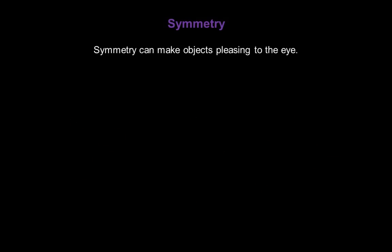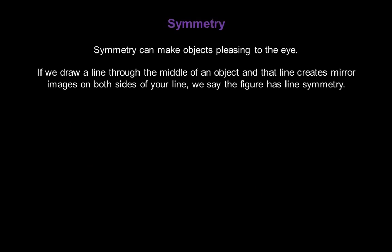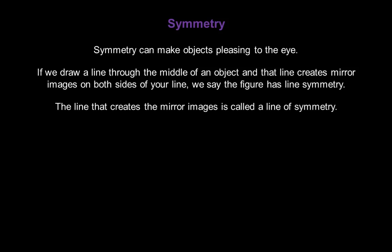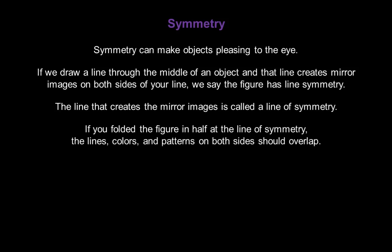Symmetry can make objects pleasing to the eye. If we draw a line through the middle of an object and that line creates mirror images on both sides of your line, we say the figure has line symmetry. The line that creates the mirror images is called a line of symmetry. If you folded the figure in half at the line of symmetry, the lines, colors, and patterns on both sides should overlap.